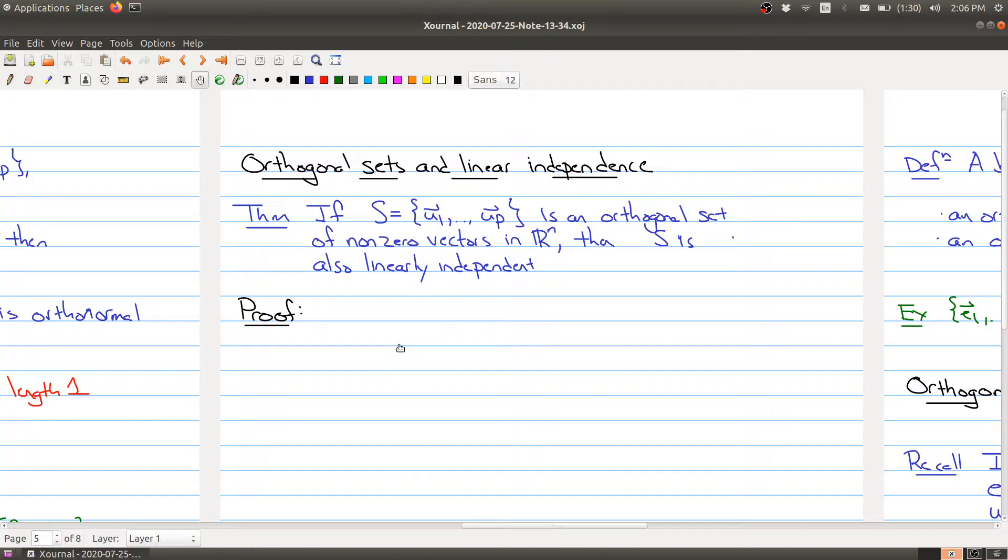And one of the reasons we like orthogonal sets is because of the following theorem, which says that if somebody hands you an orthogonal set of non-zero vectors in Rn, say u1 through up, then you actually get for free that those sets of vectors is also linearly independent. And because this is an important result, I'll walk you through the proof.